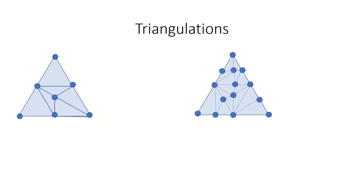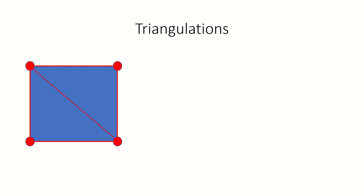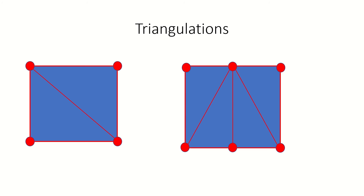Now on to triangulations. A triangulation of a shape is pretty much what it sounds like it should be: dividing that shape into triangles. Here you can see a couple triangulations of a triangle, and here are a few triangulations of a square.